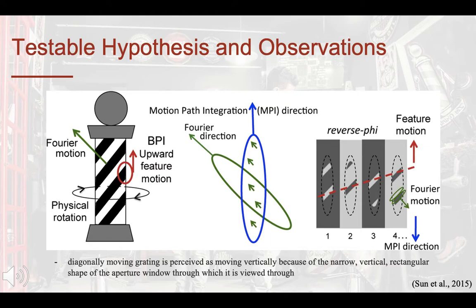A testable hypothesis to explain the barber pole illusion is that when a diagonally striped pole is turned, it makes it appear as if the stripes are moving up or down vertically. The explanation behind this is that the diagonally moving grating is perceived as moving vertically because of the narrow, vertical, and rectangular shape of the aperture window through which it is viewed. The shape of the aperture tends to determine the perceived direction of motion for an identically moving contour.